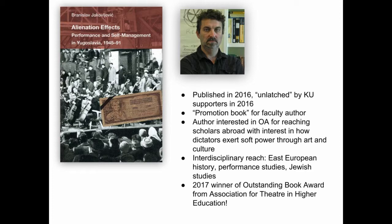To help explain the issues we're trying to address, I want to share an example chosen by my colleague Charles Watkinson, Associate University Librarian for publishing at the University of Michigan Library and director of the University of Michigan Press. This university press publishes about 15% of its books in open access, mostly through funding from Knowledge Unlatched. The book shown on the slide was published by the U of M Press in 2016 and was unlatched by an author aiming for promotion to full professor at Stanford. The author was interested in open access especially for reaching readers abroad, and given the book's interdisciplinary subject matter, open access also seemed especially important. But the author wanted to understand the use of the book and be able to make a case about its impact beyond winning a book award and quoting sales figures.